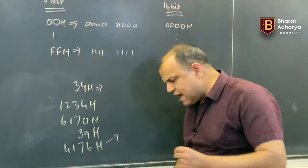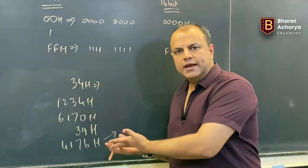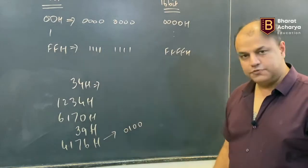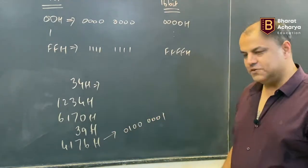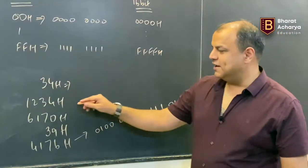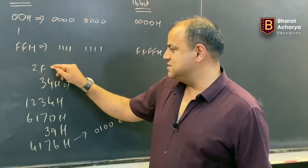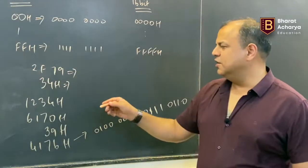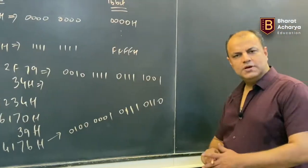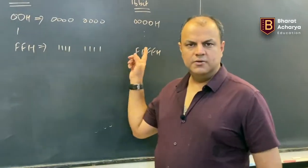You have to be very fast at binary conversion — you'll need it throughout the subject. 4176 in binary: 4 is 0100, 1 is 0001, 7 is 0111, 6 is 0110. Another example: 2F79 — 2 is 0010, F is 1111, 7 is 0111, 9 is 1001. These are 16-bit numbers; the concept of 8-bit and 16-bit should now be clear.